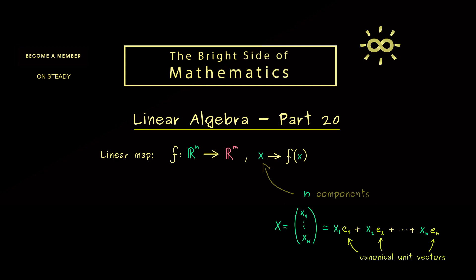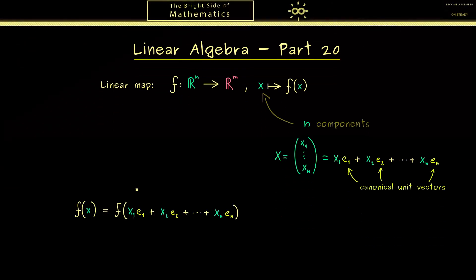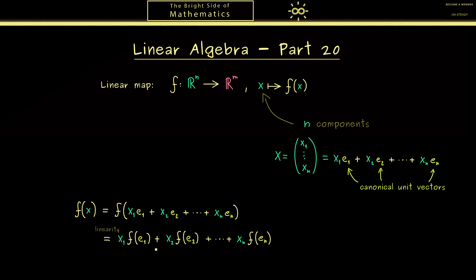Let's put the linear combination into the map f. Each image f(x) can be written in this more complicated form. We can recognize vector additions and scalar multiplications inside the function f, so we are able to use all the linearity properties. Pulling out the plus signs and the scalar factors gives x₁ times f(e₁), plus the similar thing with index 2, and this continues until the last index n — giving a linear combination with n vectors.